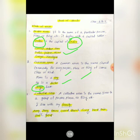A collective noun is the name given to a group of persons, places, or things, etc. I live with my family. The given word family is collective noun because it is used for family members. Like army, jury, team, crowd, bunch, gang, herd, pair, staff, group are also called collective noun.